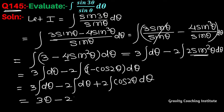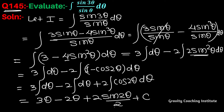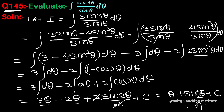Combining like terms and integrating, the result simplifies. The final answer is θ plus sin(2θ)/2 plus C, which is the required answer.